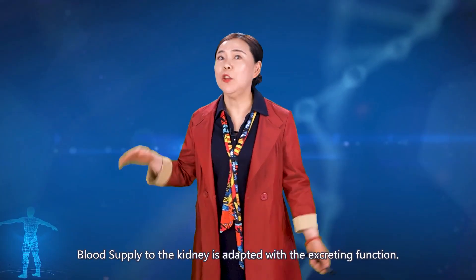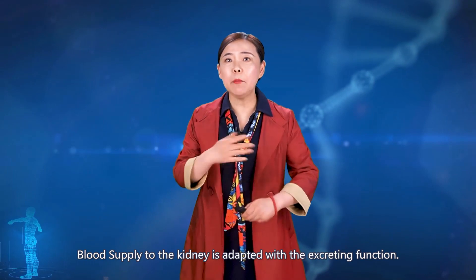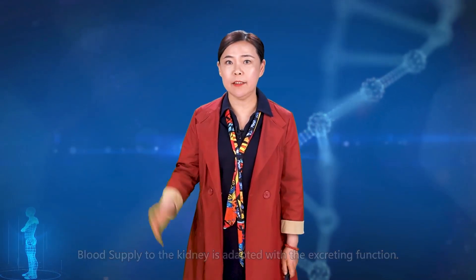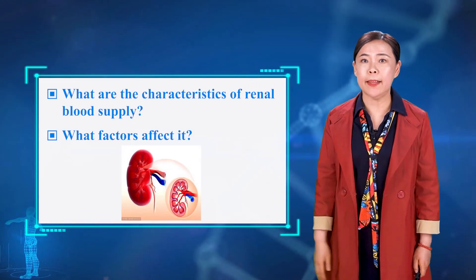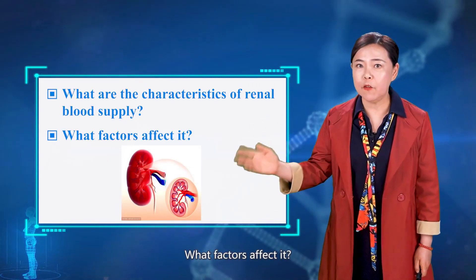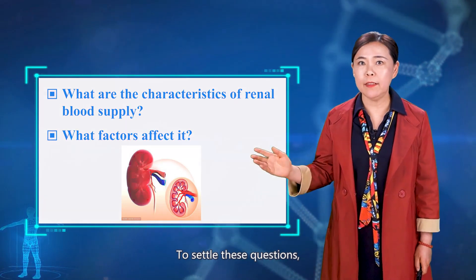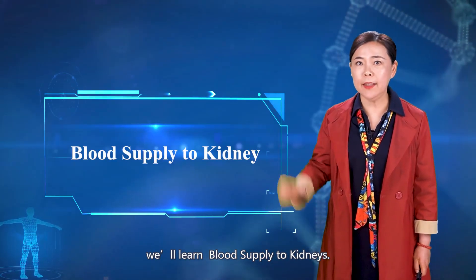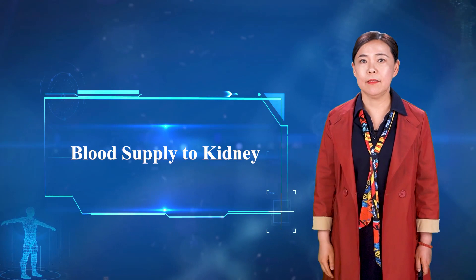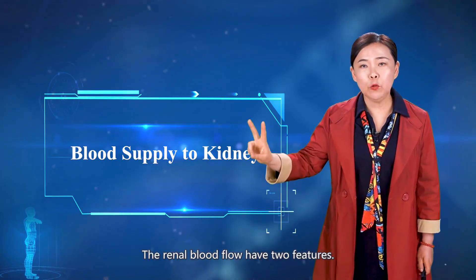The blood supply to the kidney is adapted with the urinary function. What are the features of the renal blood supply, and what factors affect it? To answer these questions, we will learn about blood supply to kidneys. The renal blood flow has two features.